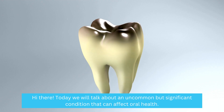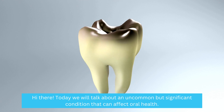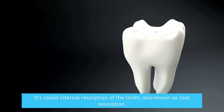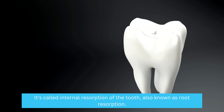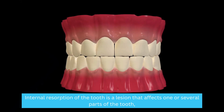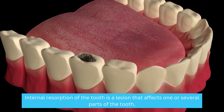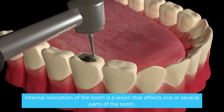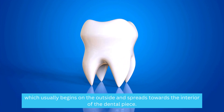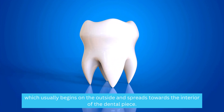Hi there, today we will talk about an uncommon but significant condition that can affect oral health. It's called internal resorption of the tooth, also known as root resorption. Internal resorption of the tooth is a lesion that affects one or several parts of the tooth, which usually begins on the outside and spreads towards the interior of the dental piece.